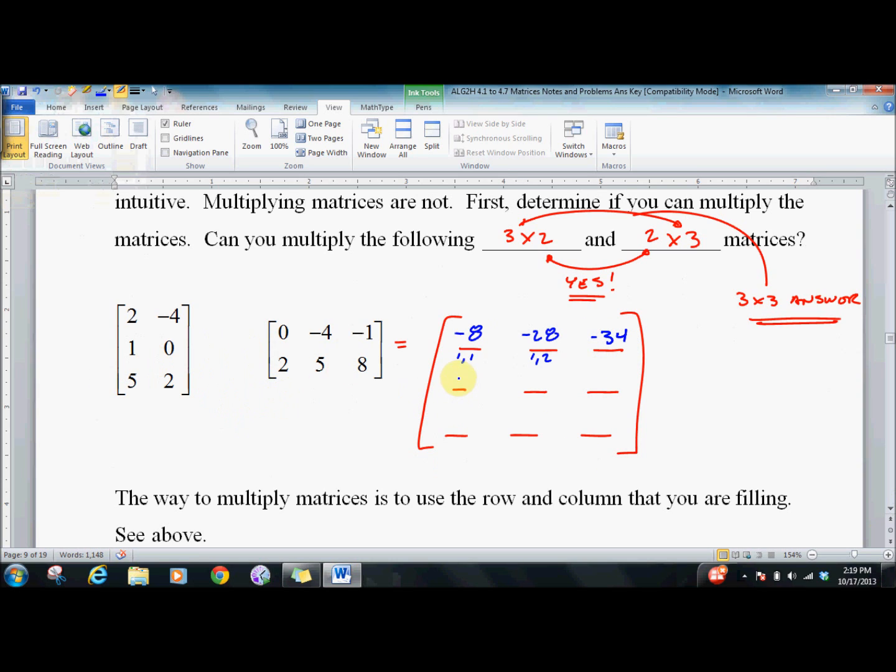One times zero and zero times two is zero. One times negative four and zero times five is negative four. One times negative one plus zero times eight is negative one.